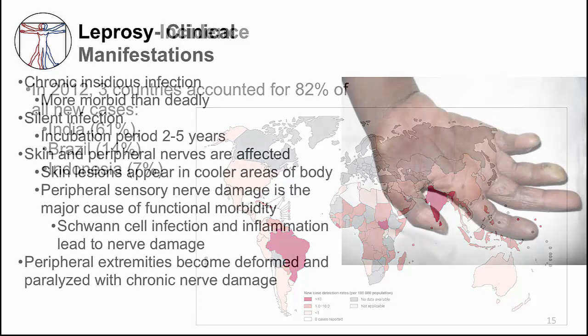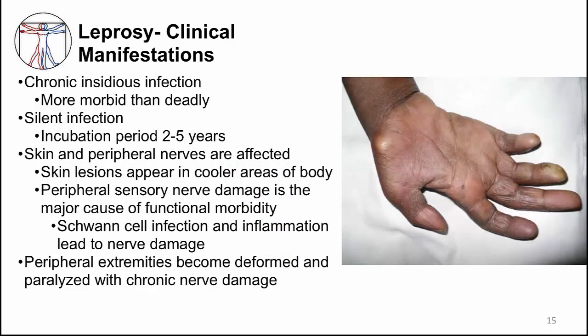Leprosy is a chronic insidious infection that causes more morbidity than death. It has a very long incubation period of about two to five years. The skin and peripheral nerves are affected — skin lesions may appear in cooler areas of the body, like the extremities. Peripheral sensory nerve damage is the major cause of morbidity; Schwann cell infection and inflammation lead to nerve damage. As you can see in the picture, the hand is very deformed from chronic ulnar and median nerve damage, which also leads to muscle wasting. If you look closely, you can see the tip of the fourth finger has a burn that the patient could not feel.